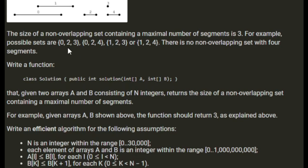For example, the possible sets are {0,2,3}, {0,2,4}, {1,2,3}, or {1,2,4} — all sets of 3 segments that don't overlap. There is no non-overlapping set with 4 segments. That seems right because segment 0 overlaps with 1, and segment 3 overlaps with 4.